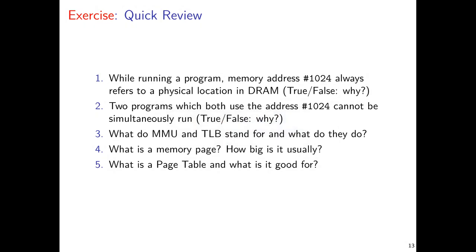We left off last time having discussed some of the issues at stake with respect to the virtual memory system. Quickly: a running program would use a memory address like 1024 and think of it as referring to some spot in main memory DRAM. This is actually a facade that the operating system and the hardware conspire to create — they translate this virtual address into something else. This makes it possible for two programs running simultaneously to both think they have virtual memory address 1024, because it's not an actual address.